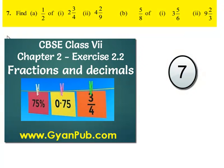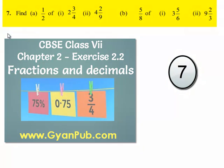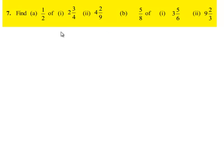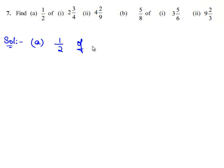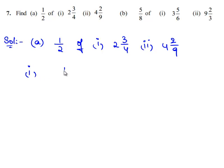Now let us move on to the next question. We need to solve 2 bits, A and B. Let us first solve the A bit. Here we need to find 1/2 of 2¾ and 1/2 of 4 2/9. Let us first consider the first bit: we need to find 1/2 of 2¾.